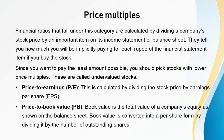Now let's look at the price-to-book value ratio, or the P/B ratio. The P/E and other multiples calculated using income statement items can be volatile due to frequent changes in those values. You can overcome this by looking at a price multiple based on a balance sheet figure like book value of equity. Book value is the total value of a company's equity as shown on the balance sheet — it includes the face value of shares, retained earnings, certain reserves, and comprehensive incomes that go directly to the balance sheet. Book value is also converted into a per-share form by dividing it by the number of outstanding shares.